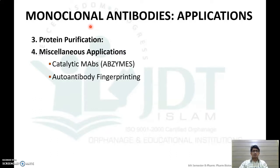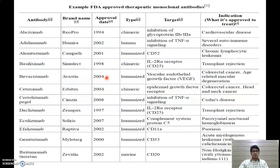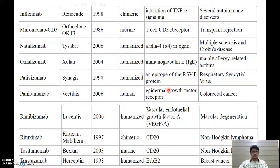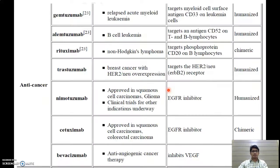Monoclonal antibodies also have applications in protein purification and miscellaneous applications such as catalytic monoclonal antibodies and autoantibody fingerprinting. Some examples of FDA-approved monoclonal antibodies include abciximab, which is a chimeric antibody that inhibits glycoprotein 2b and 3a and is used for cardiovascular diseases.